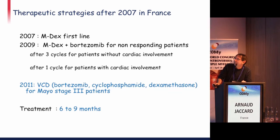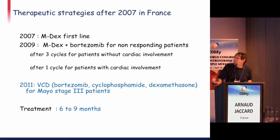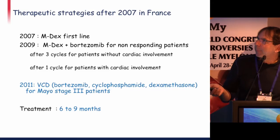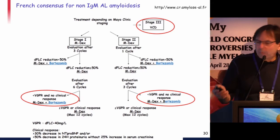In France, since 2007 we stopped doing ASCT after our study results. We added bortezomib for non-responding patients after three cycles without cardiac involvement, or after one cycle with cardiac involvement. Since 2011, we use a bortezomib-containing regimen — VCD or CyBorD — for Mayo stage 3 patients, with treatment duration limited to avoid myelodysplasia. Our guidelines aim to obtain VGPR or better.